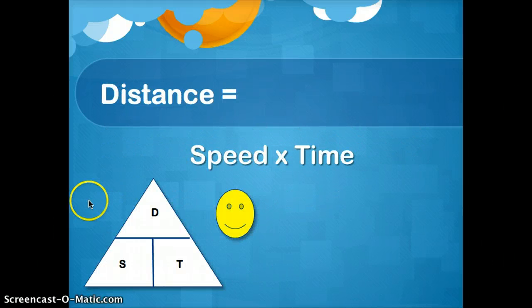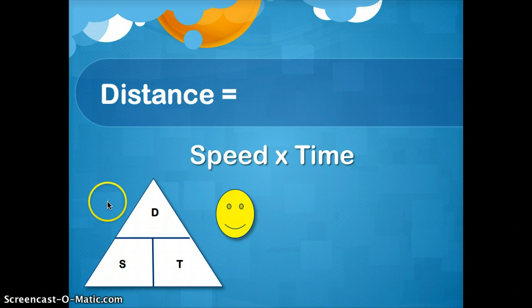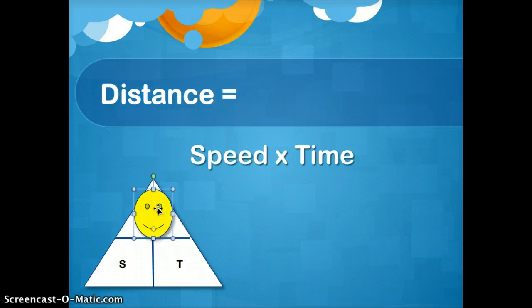And the final thing they'll ask you is sometimes the distance. The speed was this in five minutes. How far did they go? What was the distance? So this formula is a little bit different. You put your hand or whatever over the D because you're looking for distance. And since they're next to each other, it's speed times time instead of speed divided by time.